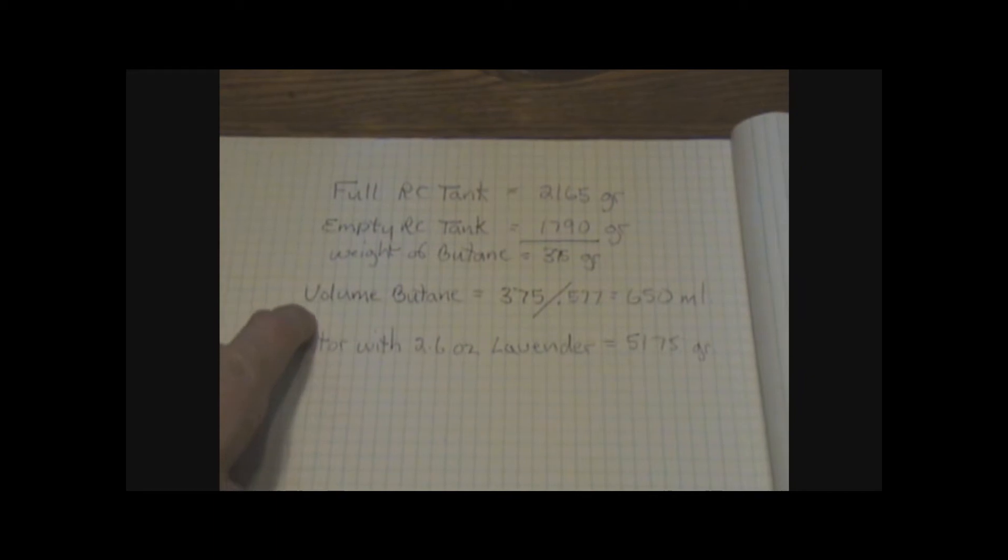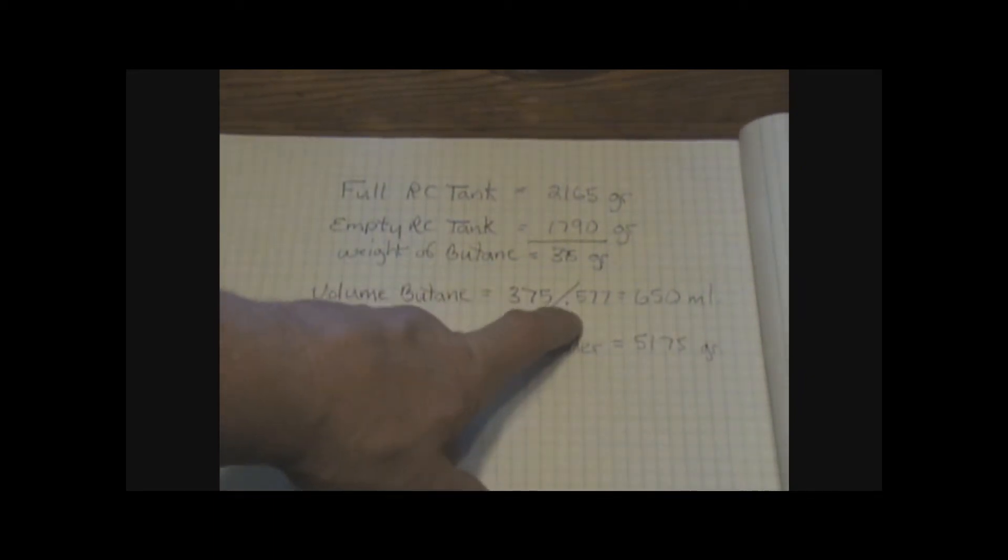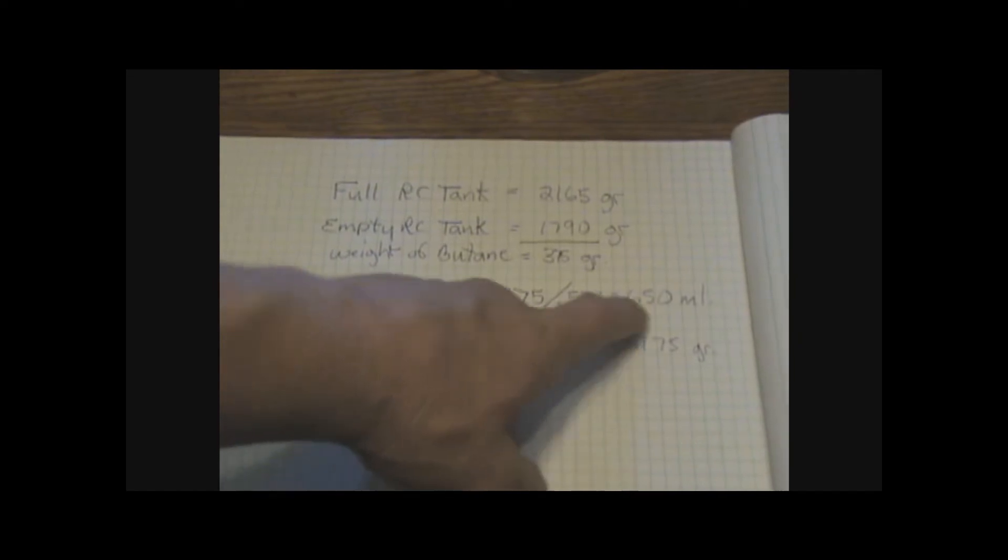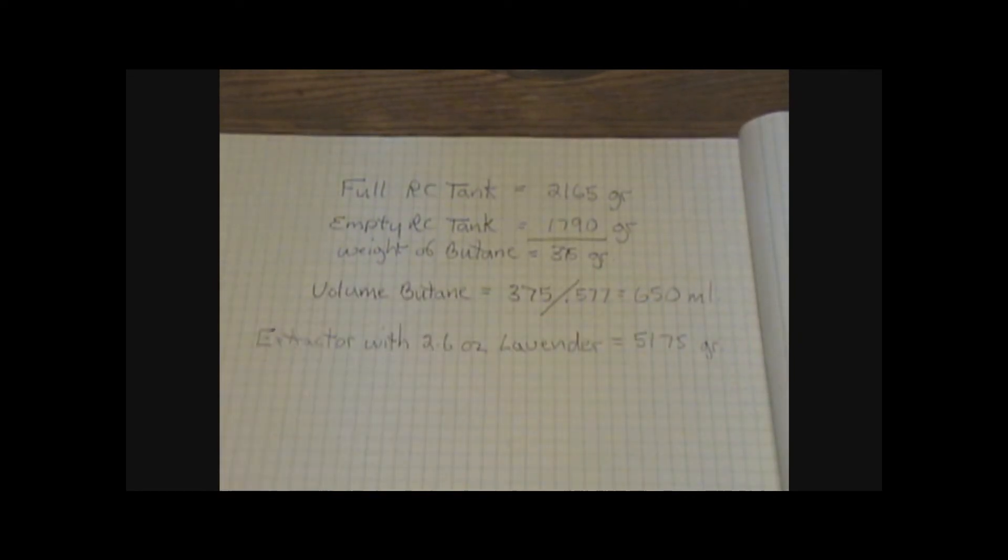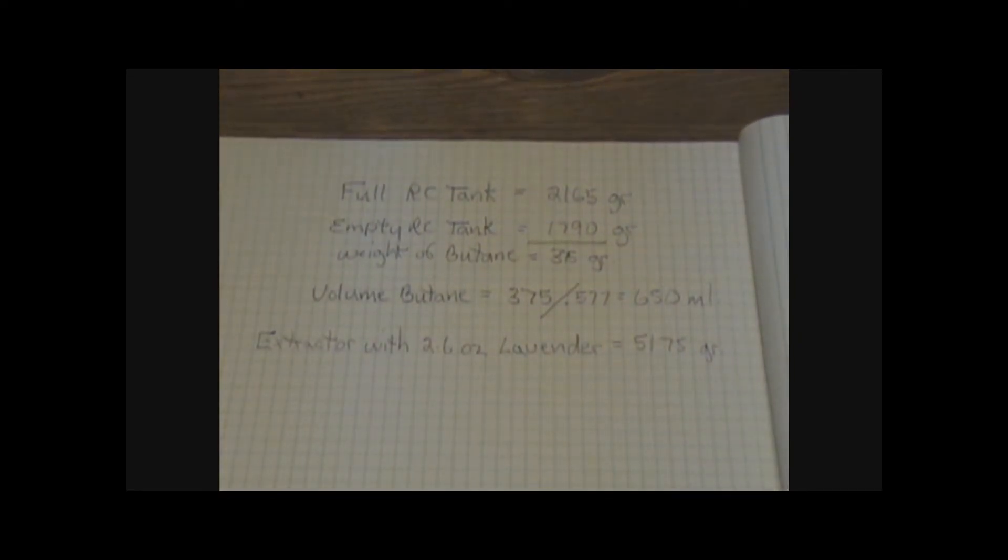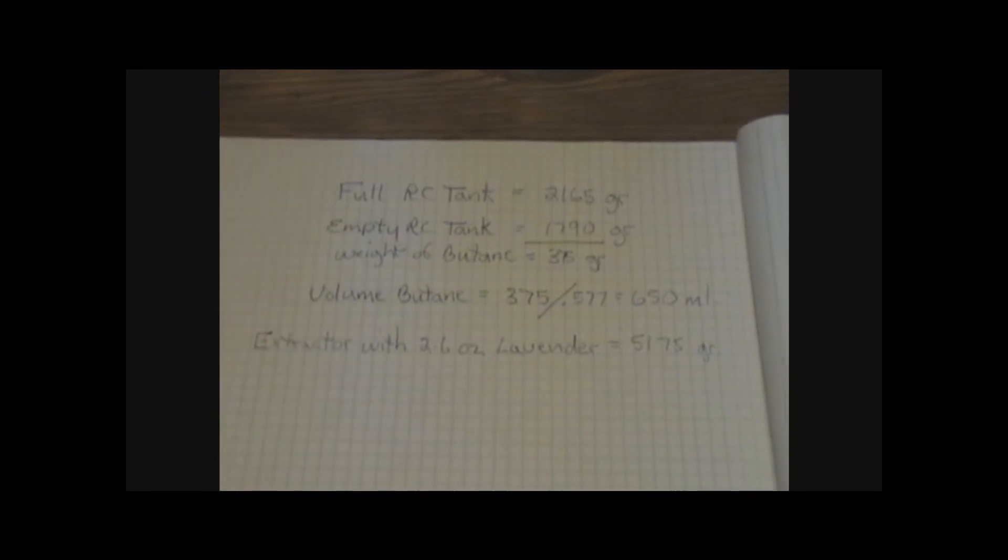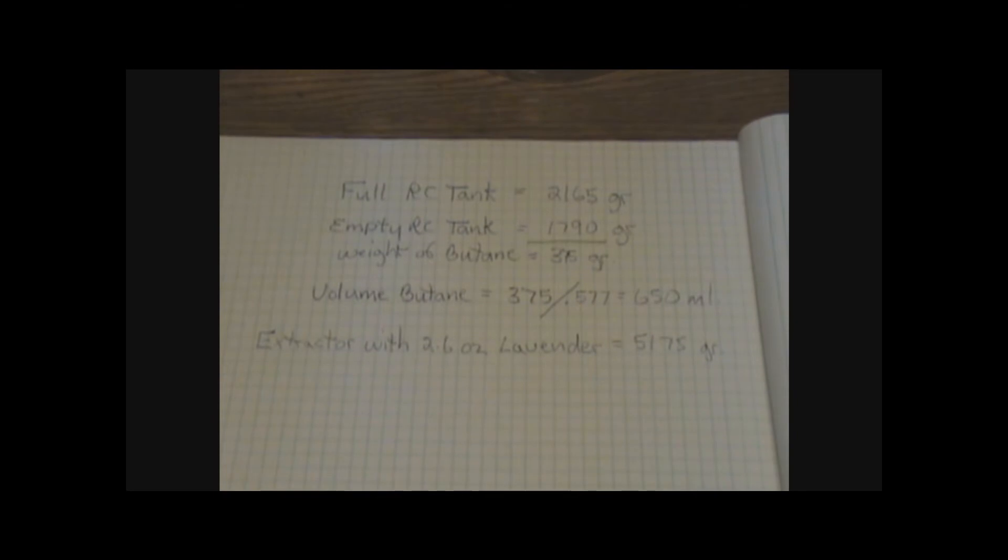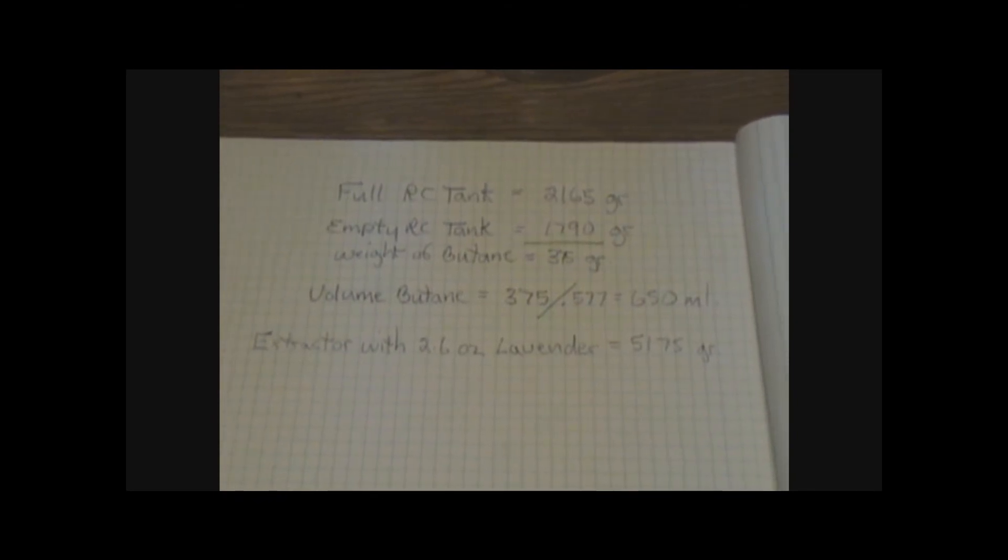If I want to convert that into volume, which I do, I want to divide 375 by 0.577. And that equals 650 milliliters. So I have 650 milliliters of butane in this tank to extract with. Which gives me a 50 milliliter area of space for my air cushion so that I'm not hydraulically filled.